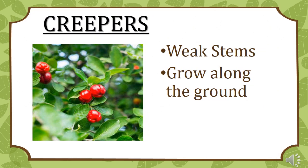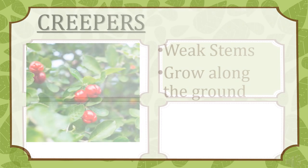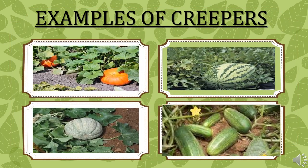Creepers have weak stems and they grow along the ground. Examples of creepers are pumpkin, watermelon, musk melon and cucumber.